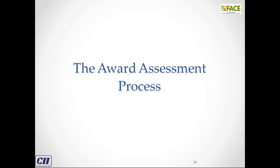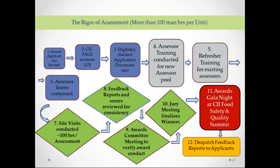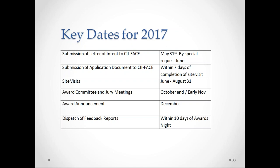Now the award assessment process, which remains the same — no change. Key dates: May 31st was the last date for applications, though some are still coming in with special permissions. We will send fresh communications to assessors. The application document will be sent to you only after site visit dates are fixed, which must be completed by August 31st. Awards committee and jury meetings will be completed by early November — October is the awards committee meeting. The award announcement is in December, and within 10 days of the awards night, we dispatch the feedback reports.